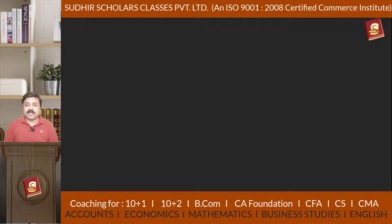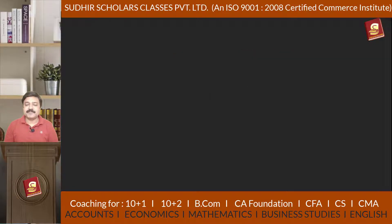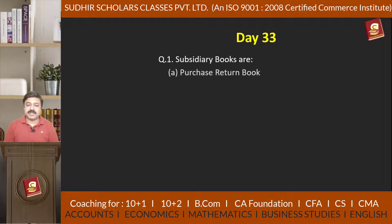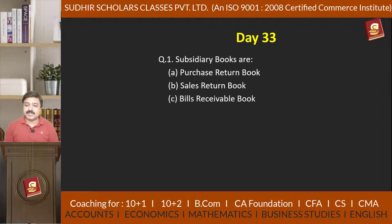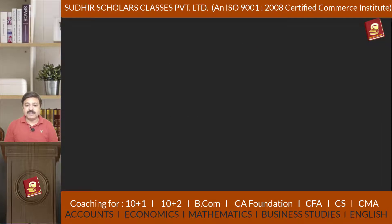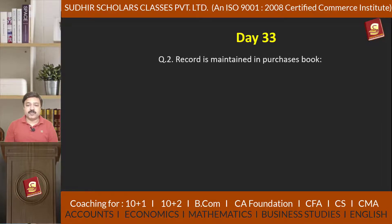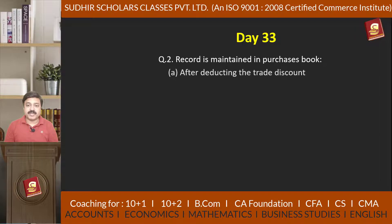Now we start Day 33 of our commerce web series. Question 1: Subsidiary books are — Option A: purchase return book, Option B: sales return book, Option C: bills receivable book, Option D: all of the above. Question number 2: Record is maintained in purchase book — Option A: after deducting the trade discount.